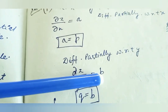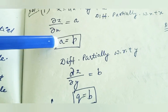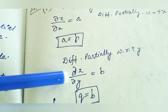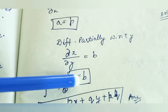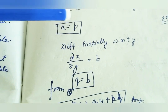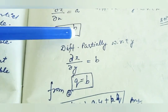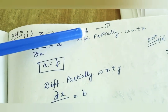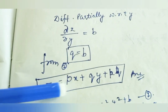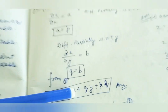The value of A is p, and the value of B is q. A and B values will be put into this equation, and your partial differential equation will be ready — that is the first solution.